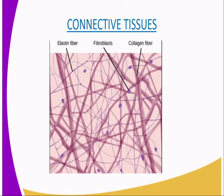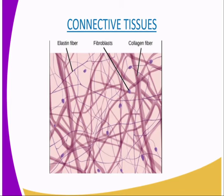Our next tissue is the connective tissues. As the name suggests, these are tissues used for connecting. We have the elastin fibers, which connect to the fibroblasts, and the fibroblasts connect to the collagen fibers. These consist of strong fibers that connect other tissues and organs, holding them together in position. For example, organs like the liver, lungs, pelvis, and gallbladder are all connected together by the collagen fibers, fibroblasts, and elastin fibers.